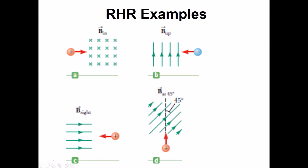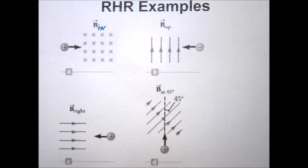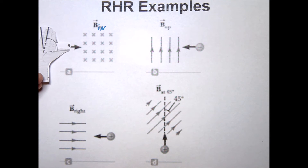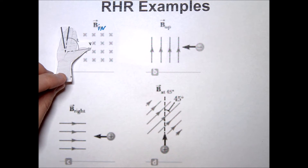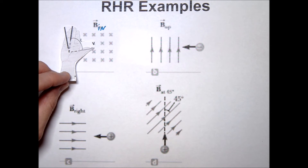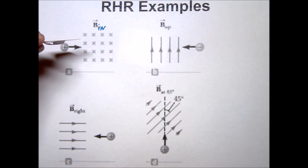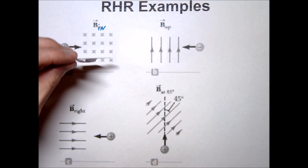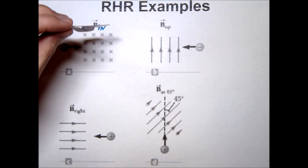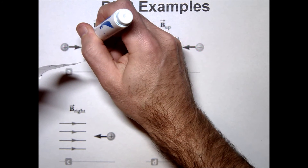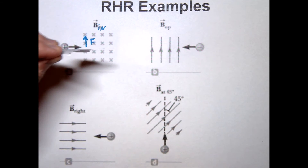Example A: we have a proton moving to the right and the B field going into the page. Take your right hand, point the thumb to the right following the charge's velocity, then orient your fingers into the page for the B field. Your palm ends up pointing upward — north. So the force on this proton as it enters the field is directed upward.